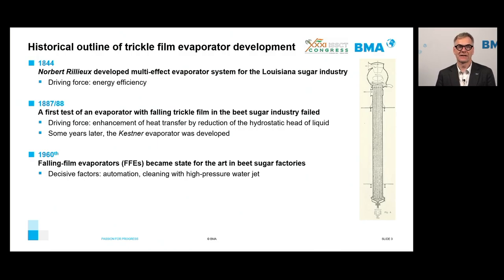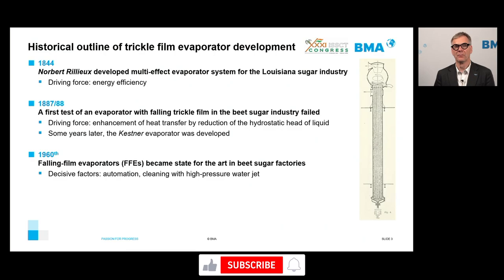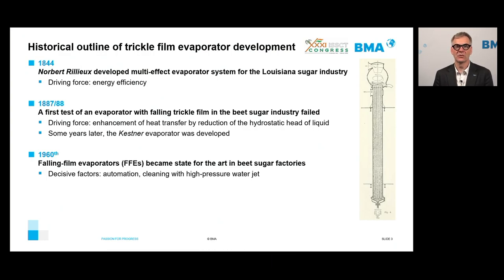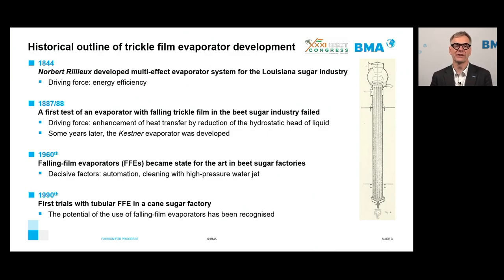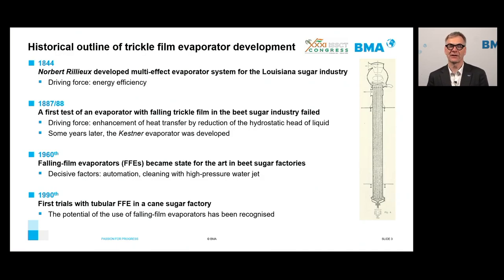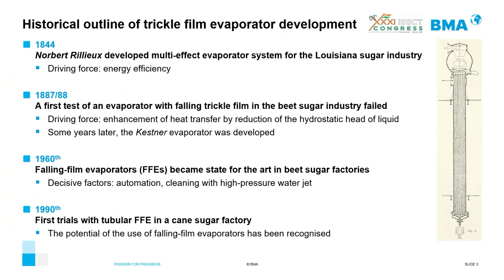Jumping forward on the timeline, in the 1960s, Falling Film Evaporators became state of the art in beet sugar factories. The decisive factors were improving automation of beet sugar production and the possibility to clean with high-pressure water. About 30 years ago, there were the first trials of the tubular Falling Film Evaporator in a cane sugar factory, and its potential was recognized, even though it was already state-of-the-art in beet sugar factories.